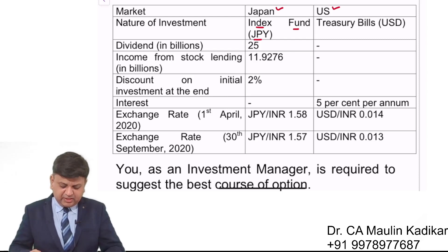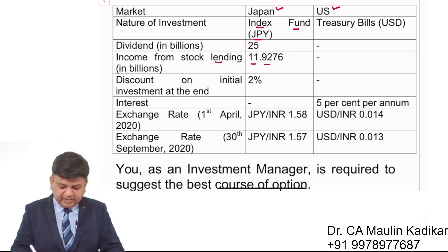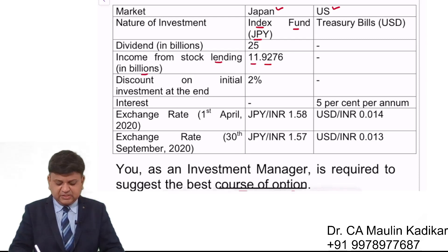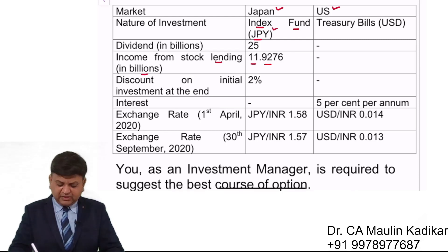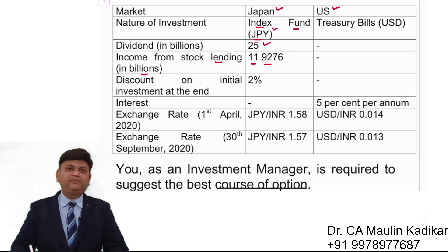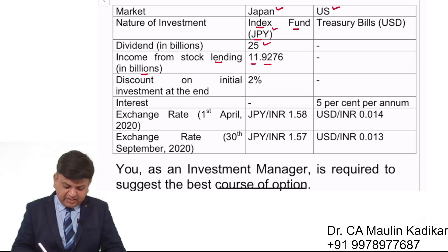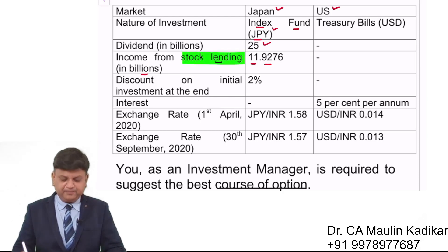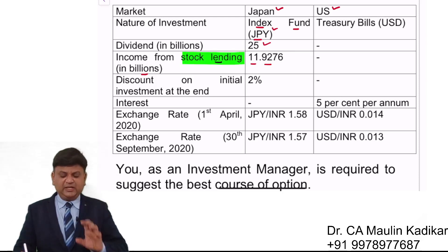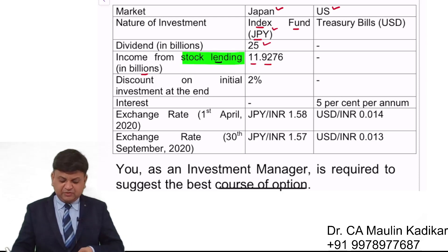Under the Japan option, income from stock lending is 11.9276 billion Japanese yen, and dividend income is 25 billion yen. You will learn about the stock lending scheme in detail in the derivatives chapter; for now let me give a small explanation.